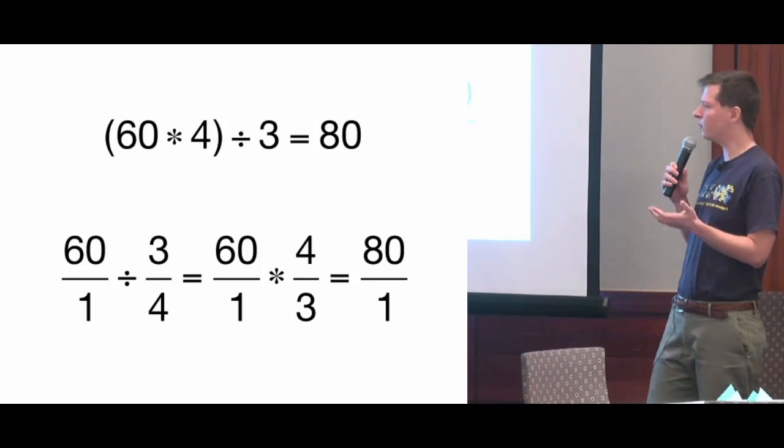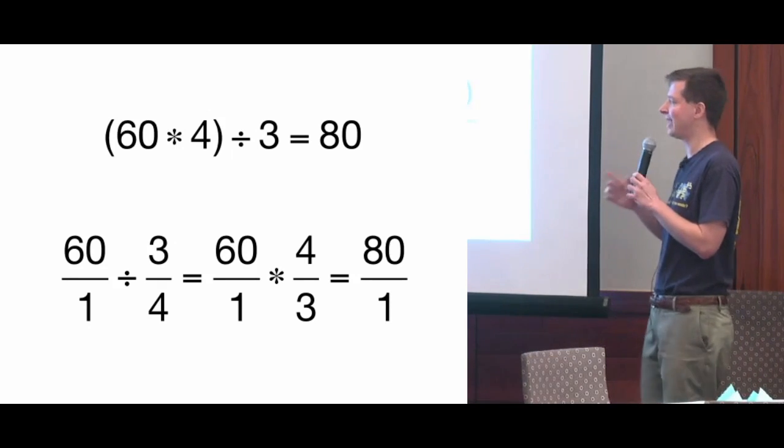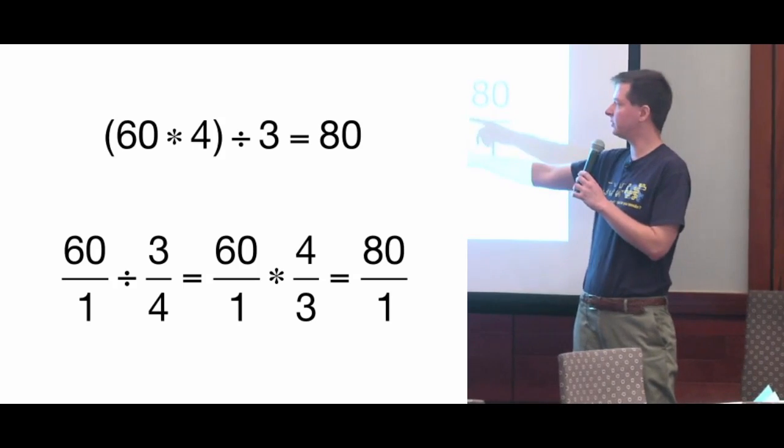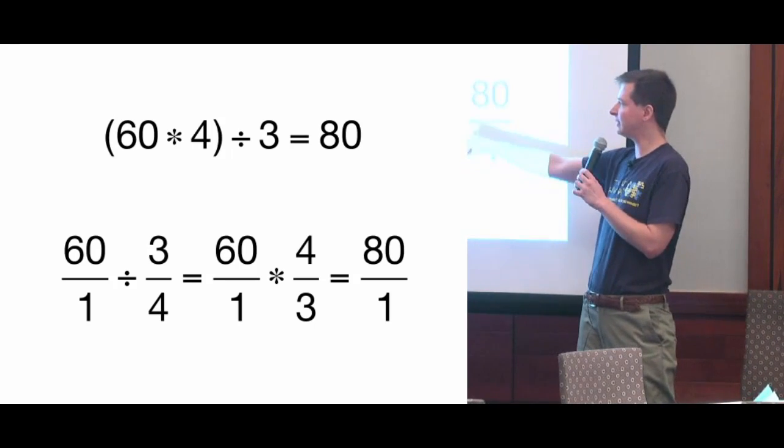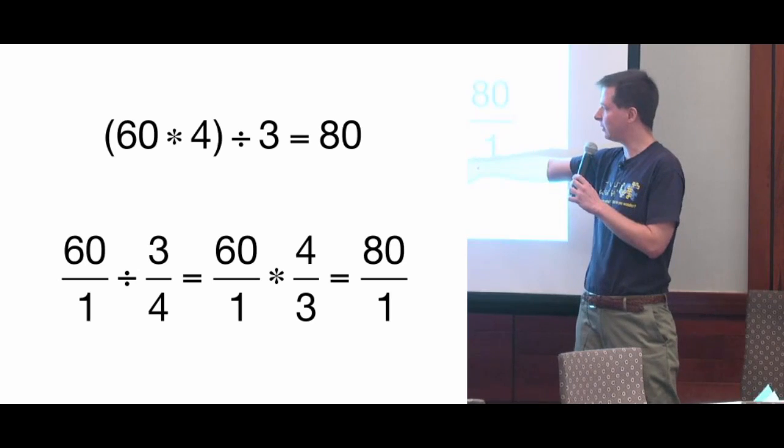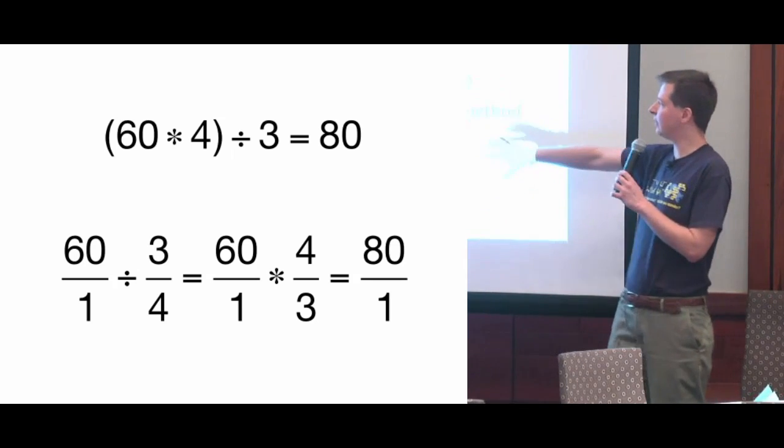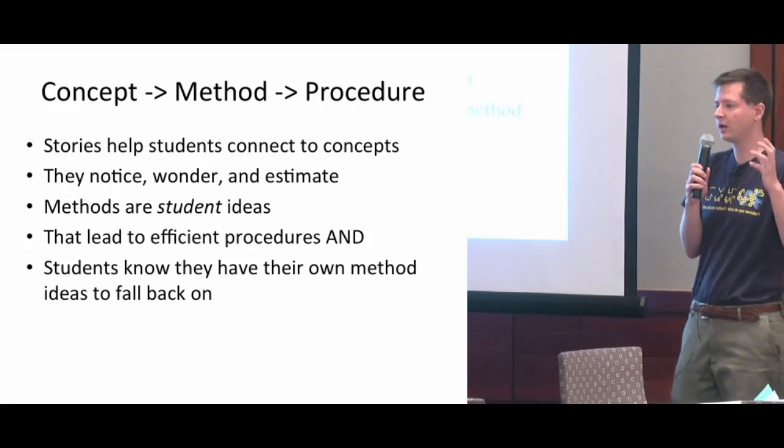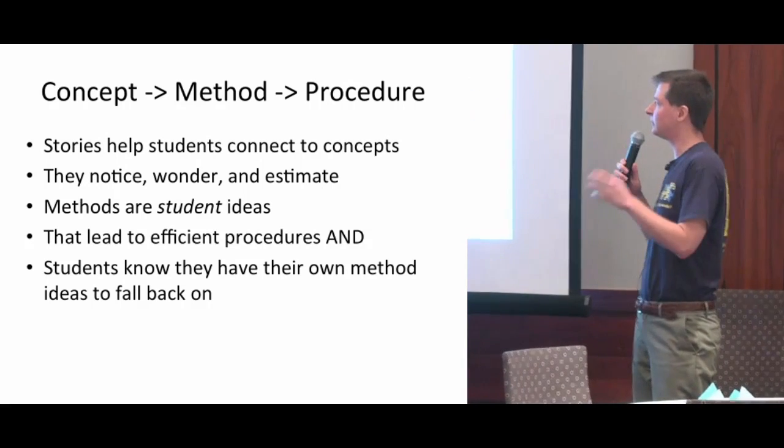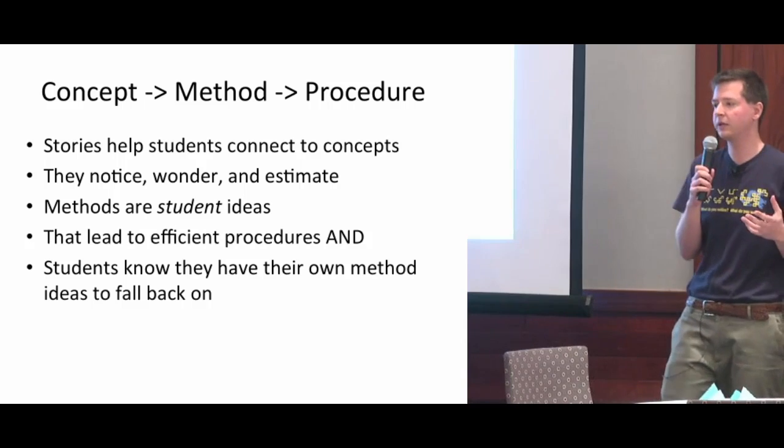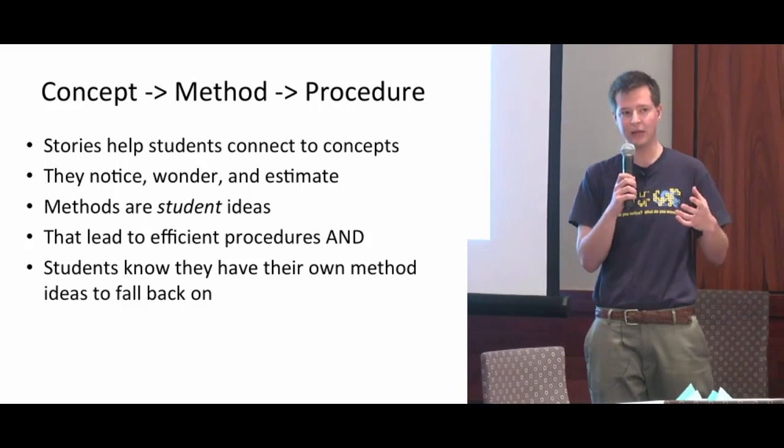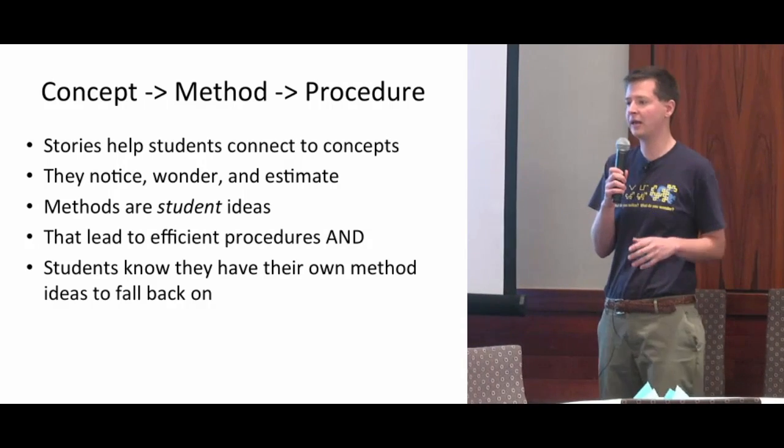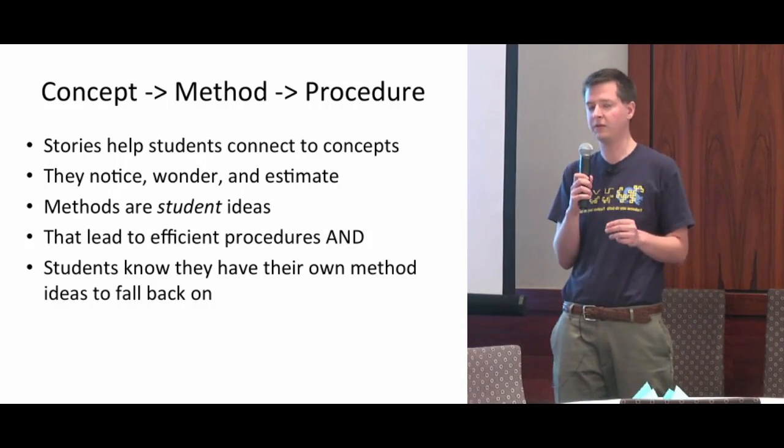We look and we think, well, what are we doing here? Let's write this using some math. 60 divided by three-fourths, finding how many three-fourths are in 60, can be calculated by multiplying 60 by four and dividing by three. So you end up with 80 three-fourths. I got my students on that journey from concept using their methods to procedures by having them look at a story, notice, wonder, estimate to bring out the concepts, and then we had student ideas, a huge variety of methods that could lead us to efficient procedures.